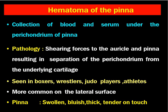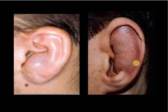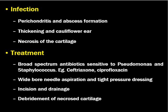The pinna appears swollen, bluish, thick, and is tender to touch. Sometimes this is fluctuant. When there is fresh blood it becomes fluctuant, and when there is an organized hematoma there may not be fluctuation. This is the typical picture of hematoma of the pinna — you can see the pinna is swollen with blood collection. When there is infection of the hematoma, that leads to perichondritis and abscess formation. There will be thickening and cauliflower ear, and the cartilage becomes necrotic. The pinna loses its normal shape. It is very important to understand that the perichondrium provides nutrition for the cartilage, so if there is a gap between the perichondrium and the cartilage, the cartilage does not get nutrition and undergoes necrosis.